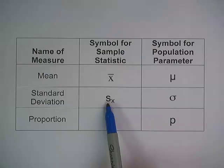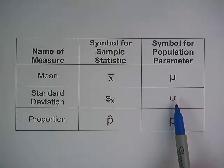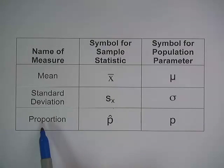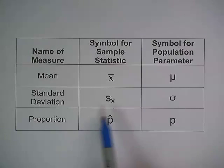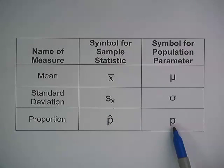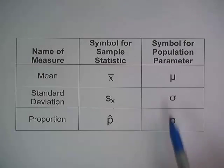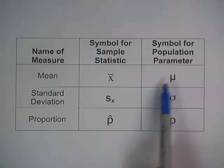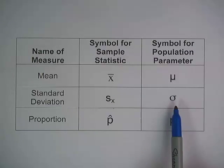So many times we're going to use s to estimate sigma. If we're looking for a proportion, a sample proportion is abbreviated p-hat — that's p with the little hat on it. And many times we're going to use p-hat to make an estimate of p, where p represents your population proportion. So to summarize: x-bar estimates mu, s sub x estimates sigma, and p-hat estimates p.